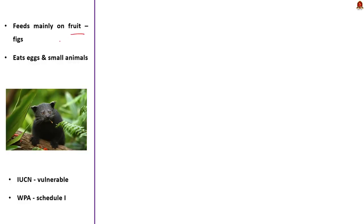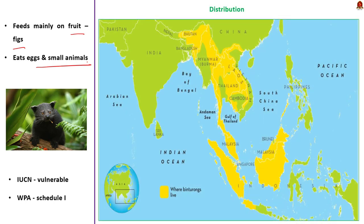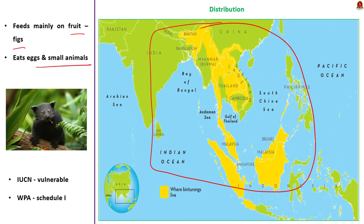The Binturong feeds mainly on fruit such as figs, but also eats eggs and small animals — hence it is an omnivore. Binturongs live in the rainforest of Southeast Asia and are also found in India. Regarding conservation status, it is classified as Vulnerable on the IUCN Red List and is listed under Schedule 1 of the Wildlife Protection Act 1972.